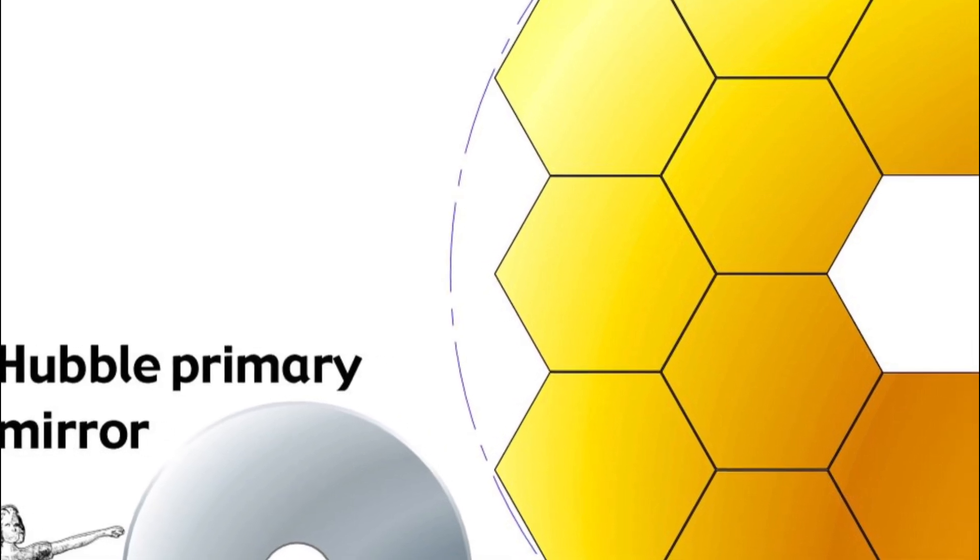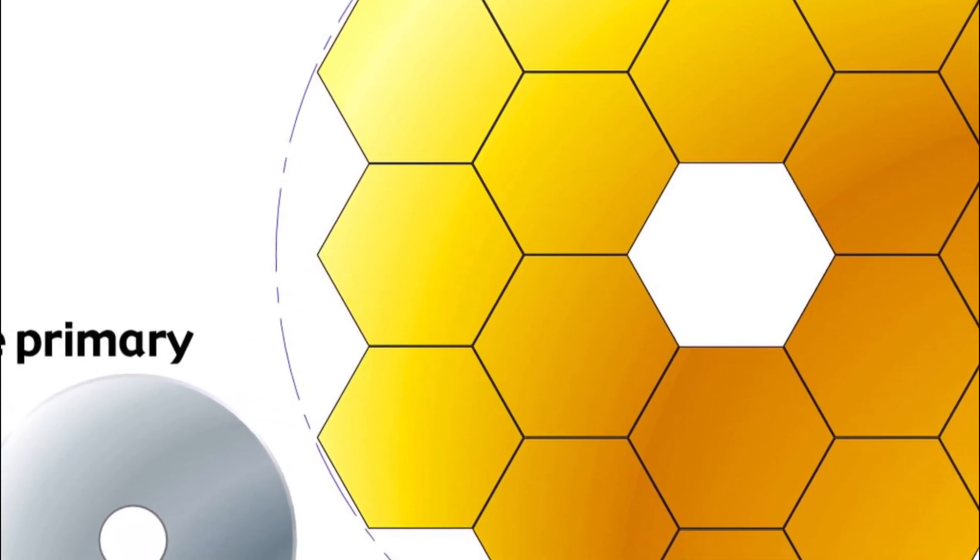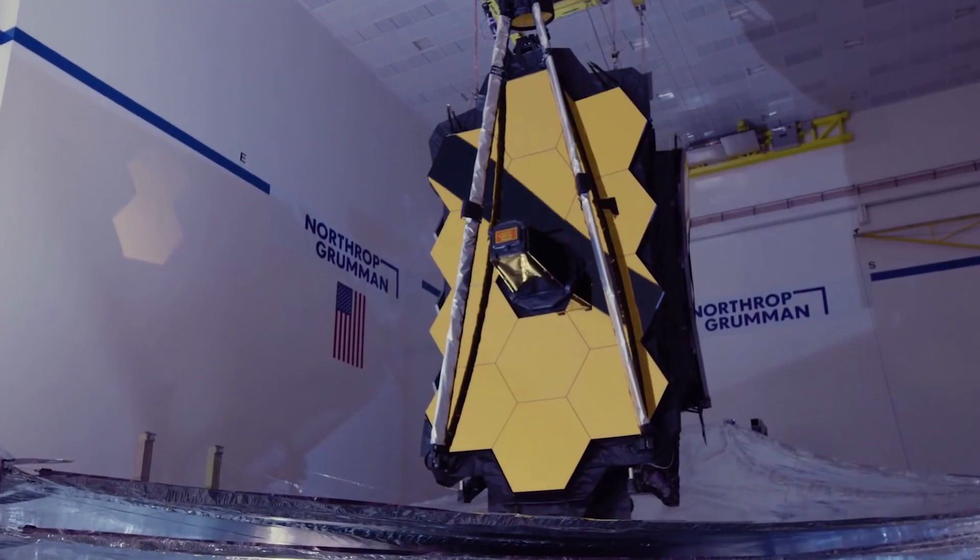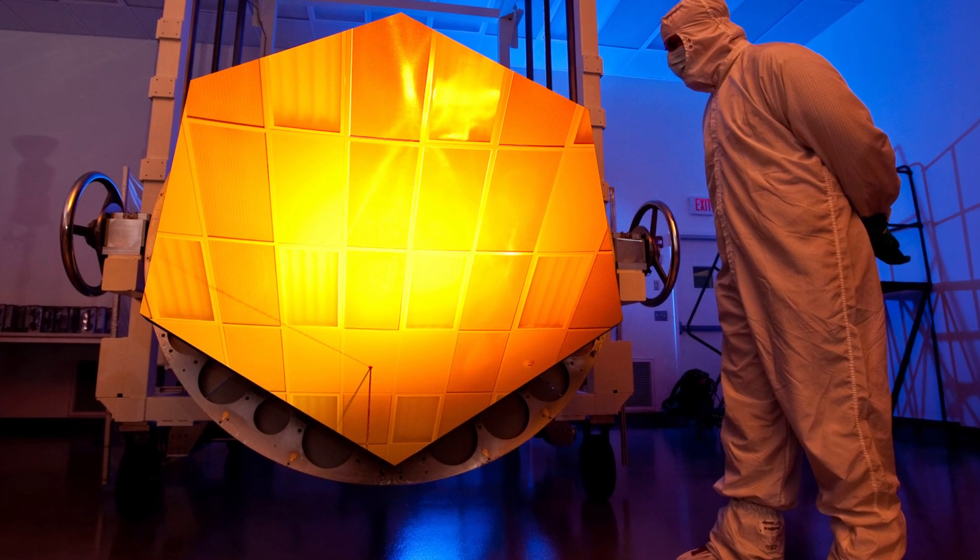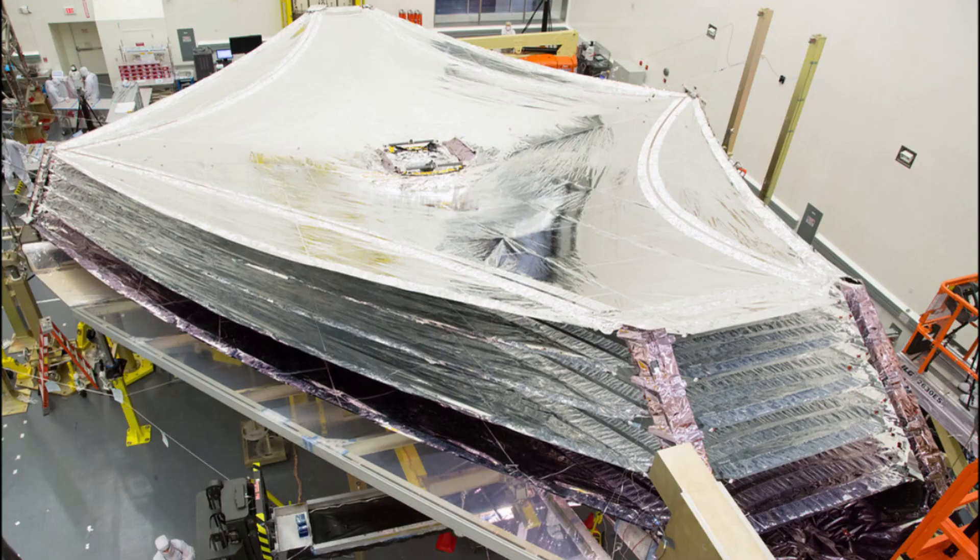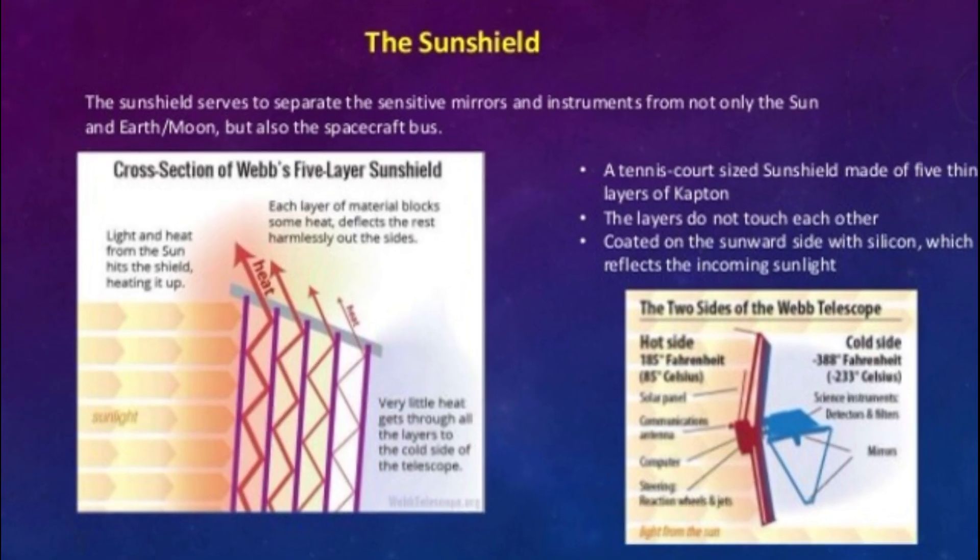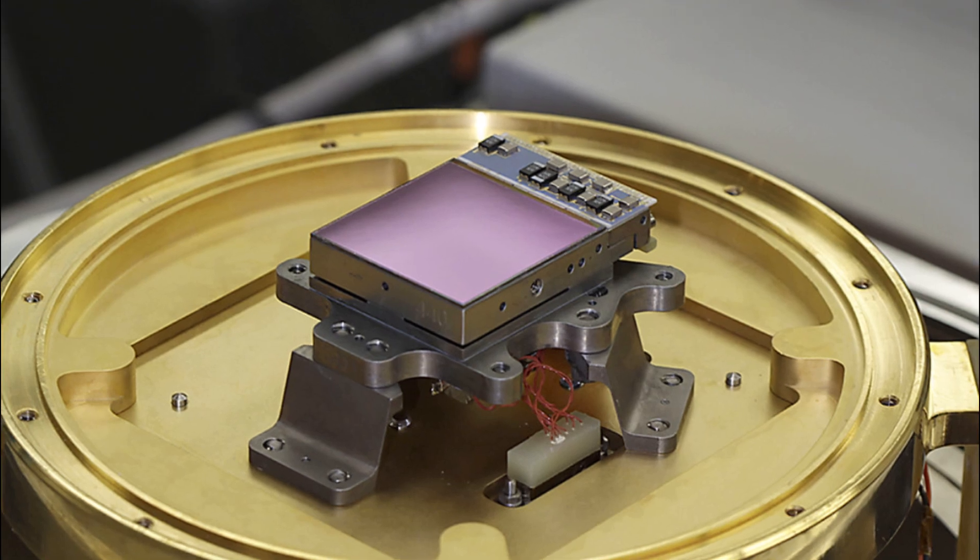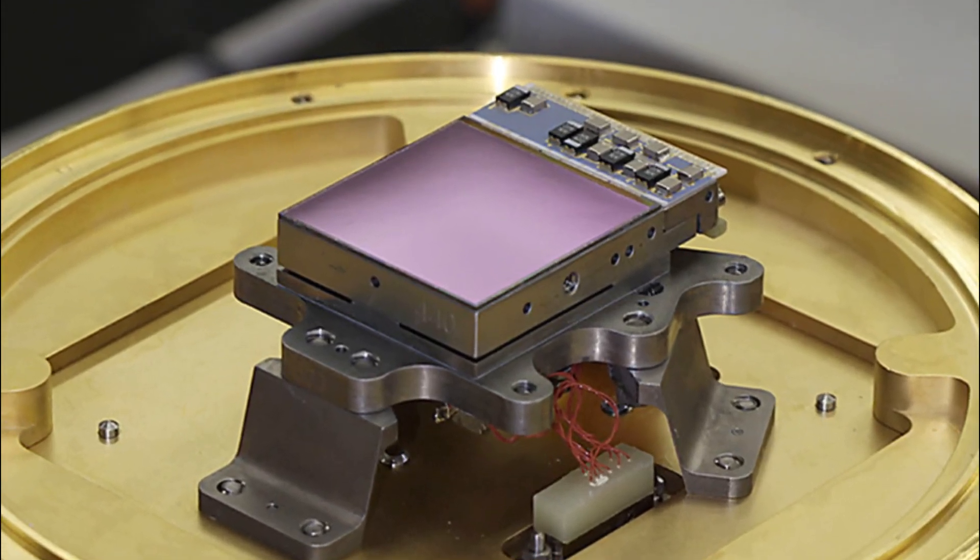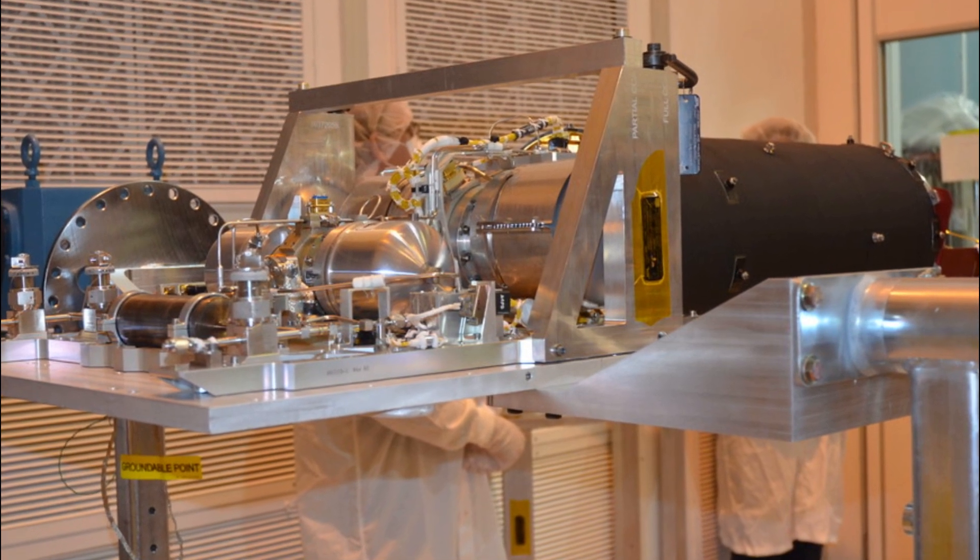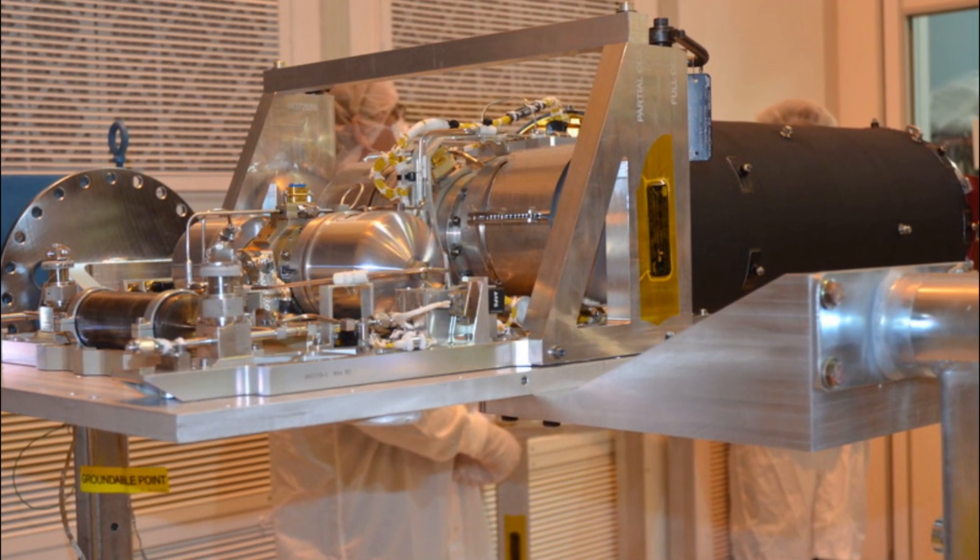Several innovative technologies have been developed for Webb. This includes a primary mirror that is made of 18 separate segments that unfold and adjust to shape after launch. The mirrors are made of ultra-lightweight beryllium. Webb's biggest feature is a tennis court-sized five-layer sun shield that attenuates heat from the sun more than a million times. The telescope has detectors that are able to record extremely faint signals. One instrument has programmable micro-shutters, which enable observation of up to 100 objects simultaneously. Webb also has a cryo-cooler for cooling the mid-infrared detectors of another instrument to a very cold 7 Kelvin, so they can work.